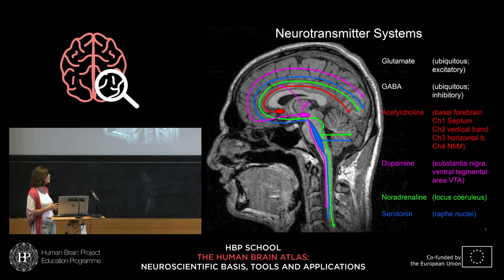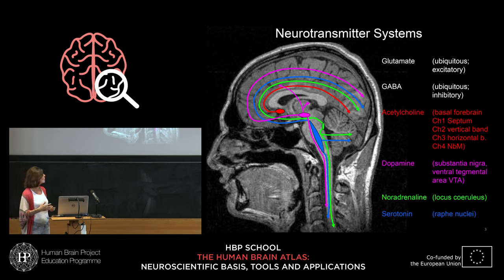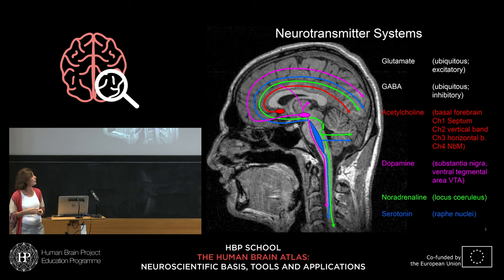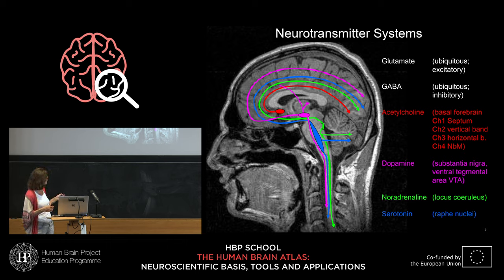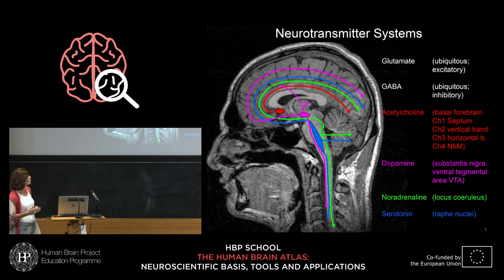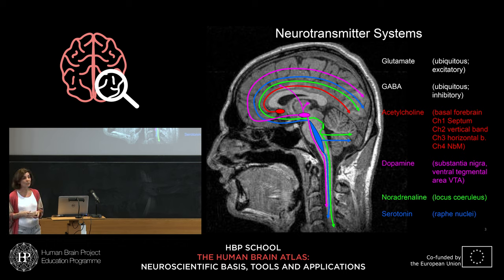Another modulatory neurotransmitter is dopamine, produced in only two places: the substantia nigra and the ventral tegmental area, both in the brain stem. Again, these are projection neurons, so dopamine can be released anywhere in the brain. Two other important modulatory neurotransmitters are noradrenaline, produced only in the locus ceruleus, and serotonin, produced in the raphe nuclei.